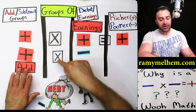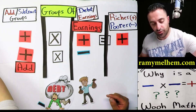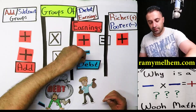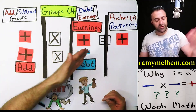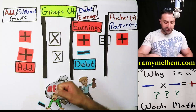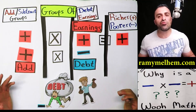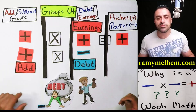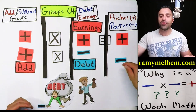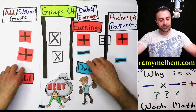What am I adding? I'm adding groups of debt. Positive times negative is adding groups of debt. If you add debt — is that going to make him richer or poorer? Poorer. Your answer will be negative — he's going to get poorer.